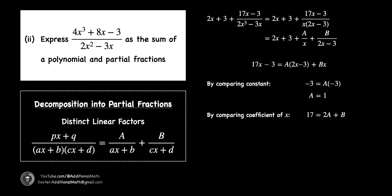Similarly, by comparing the coefficient of x on the left, we have 17. And on the right, we will have 2A plus B. Replacing A to be 1 found earlier, our B is found to be 15.